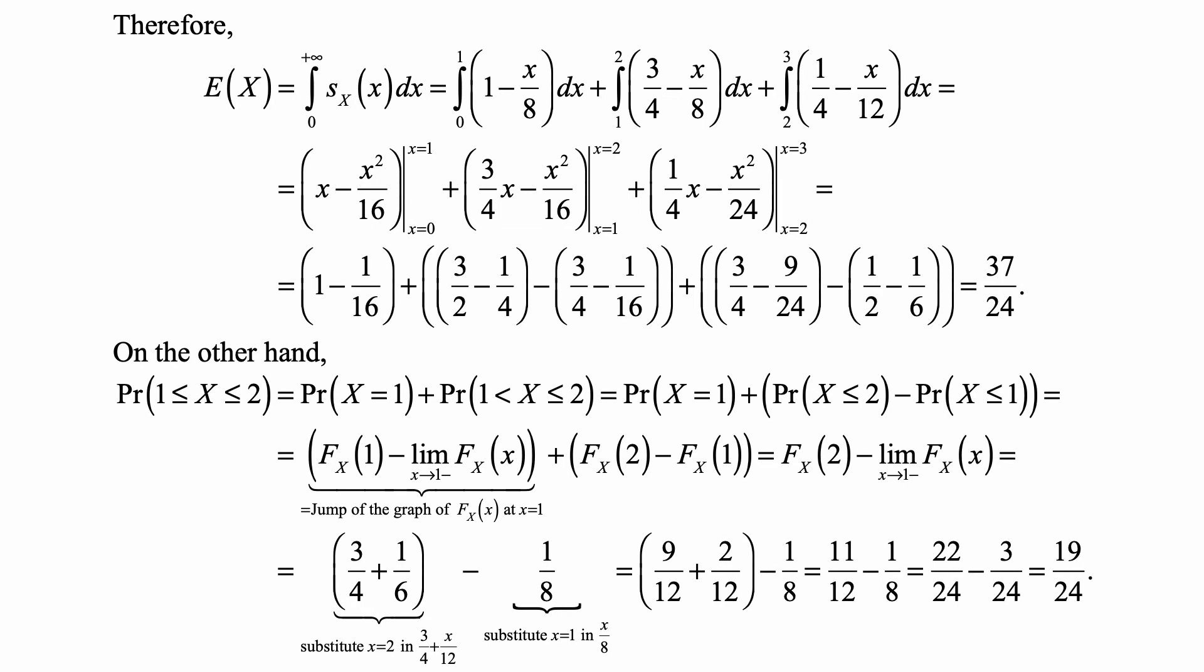And we can just find F_X(2) by plugging in x equal to 2 in the formula. That's 3/4 plus 1/6, and subtract 1/8, which is that limit from the left-hand side, which we just get from a substitution in an appropriate formula. So we get 9/12 plus 2/12 minus 1/8, so 11/12 minus 1/8. That's 22 over 24 minus 3 over 24, and it's 19 over 24.